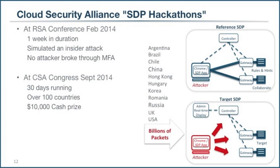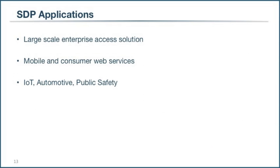One interesting piece of feedback we got was that people said this seemed too good to be true or that we'd made a mistake in our analysis. So the SDP team decided to hold an open hackathon to verify these results. We had our first one at the RSA Security Conference in February 2014, ran it for a week, and no one was able to break through it. We got feedback that the prize money was too small and it was only a week long, so we reran the hackathon at the CSA Congress in September — made it 30 days, offered a $10,000 cash prize, and got attackers from 100 countries. Once again, no one was able to break the SDP model.